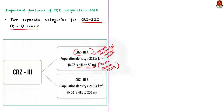The second category, CRZ-3B, covers rural areas with population density below 2,161 per square kilometer as per the 2011 census. These areas retain a no development zone of 200 meters from the high tide line. So for the A category, the no development zone is 50 meters, and for the B category it is 200 meters.